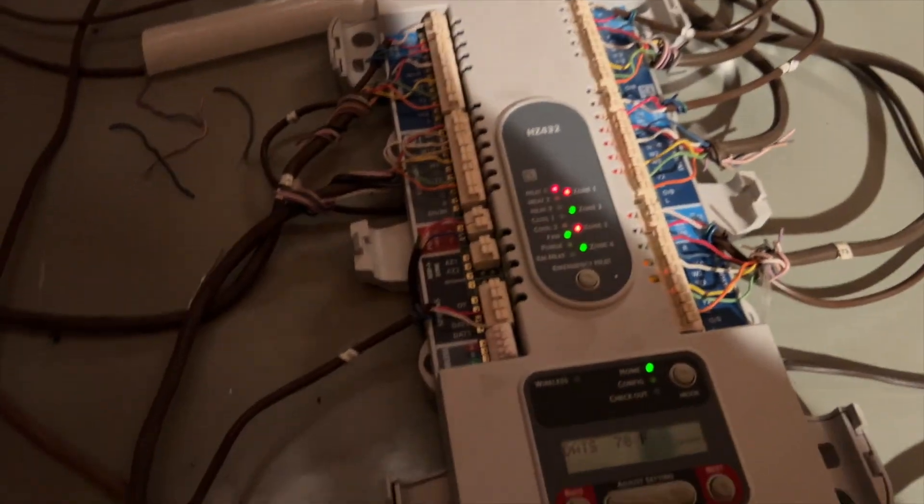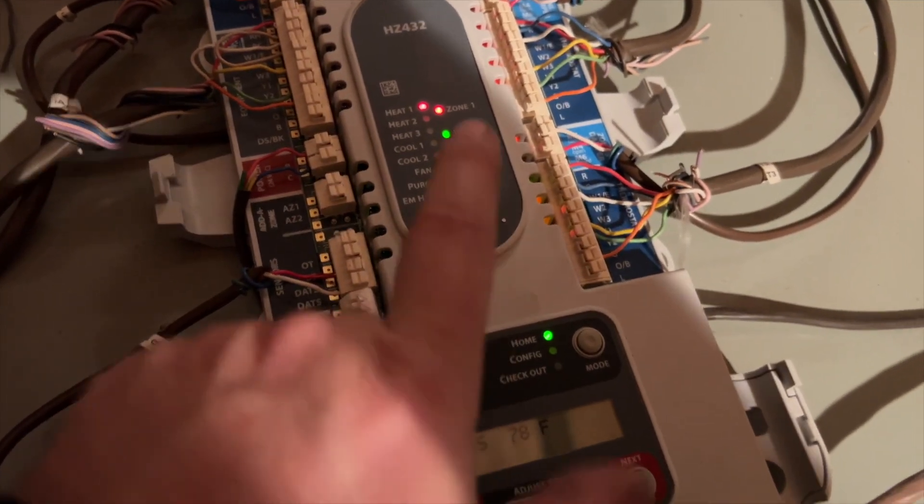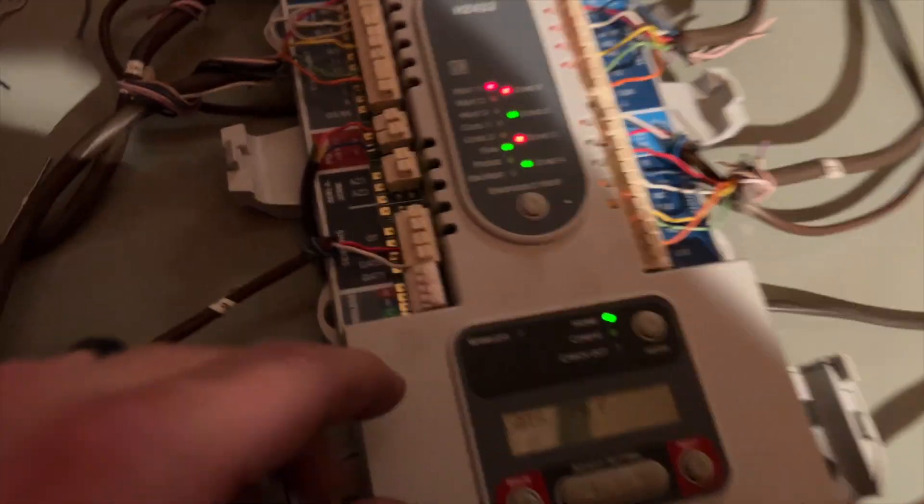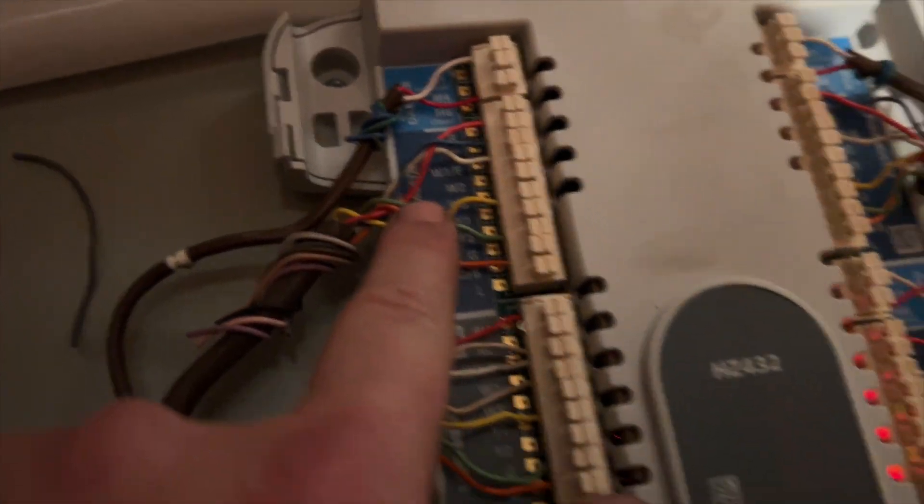So we go ahead and pull this panel off. Under here we have the emergency heat button. We can switch that in case our heat pump's not working. Now this is actually a heat pump. So you can see here we have our heat pump set up. Right here's your dampers, this is your thermostat, and this can do up to four zones.